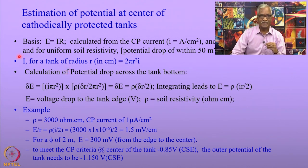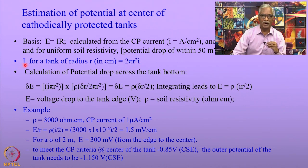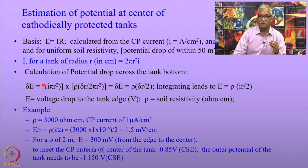First, calculate the current required for cathodic protection — this is done by knowing the current density and the area of the tank, so the total current required for protecting the tank can be calculated.